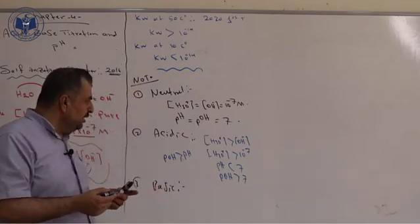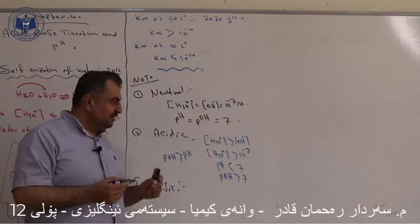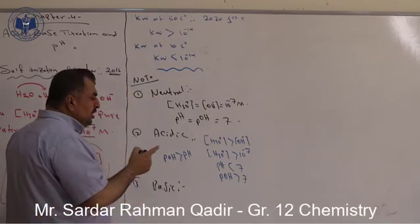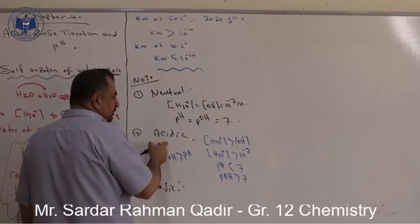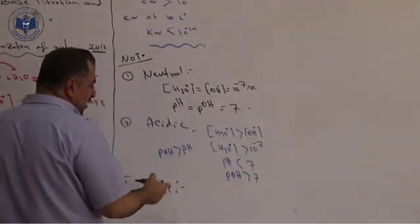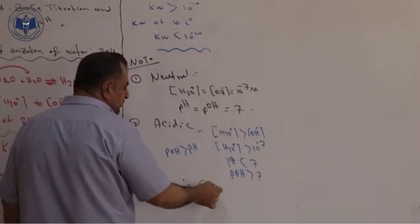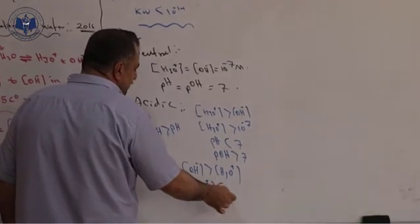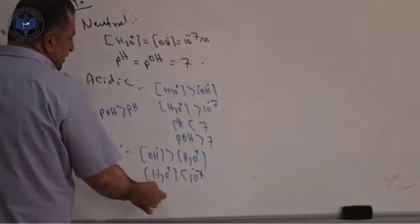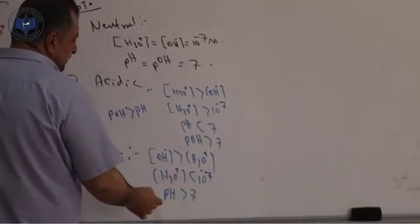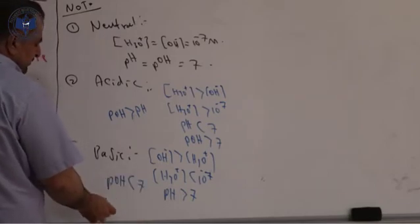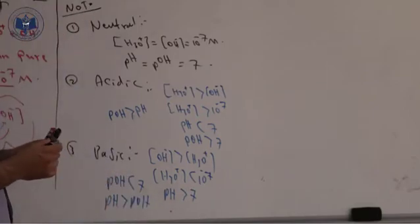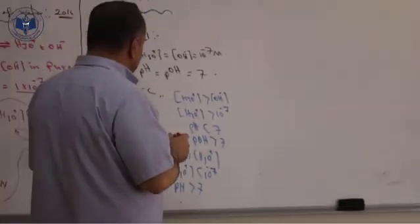Which one is true? If it says which one is true about the acidic solution, you say hydronium is bigger than hydroxide. We have one question from the third term asking exactly this. About the basic solution: concentration of hydroxide is bigger than hydronium; concentration of hydronium is smaller than 10 to the power negative 7; pH is bigger than 7; pOH is less than 7; and pH is bigger than pOH.